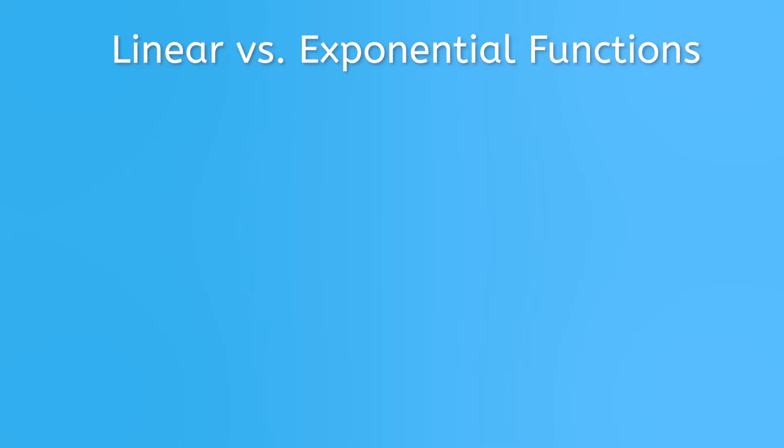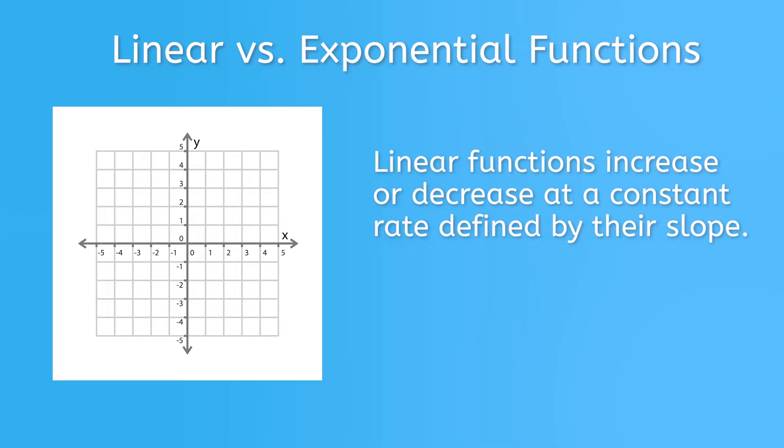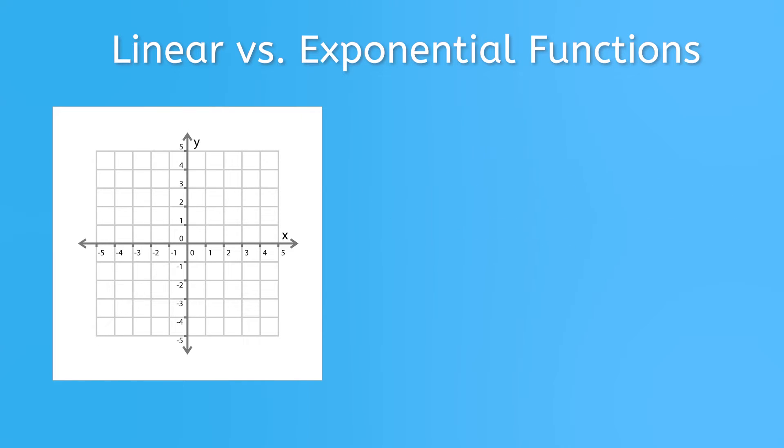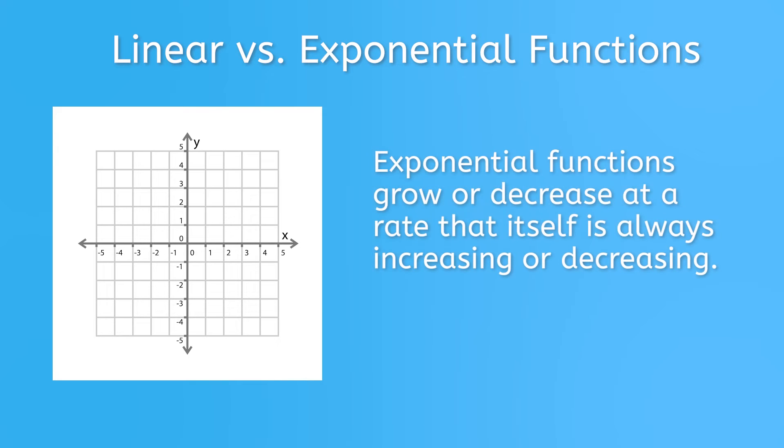You see, exponential functions are different from linear functions. Linear functions increase or decrease at a constant rate, defined by their slope, over a period of time. As you know, they're represented by a straight line on a graph. Exponential functions don't work that way. They grow or decrease at a rate that itself is always increasing or decreasing. That's why they're represented by a curve. Which brings us full circle, back to the question of my movie contract. Which offer should I take? Let's look at it mathematically.